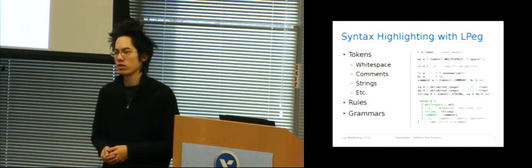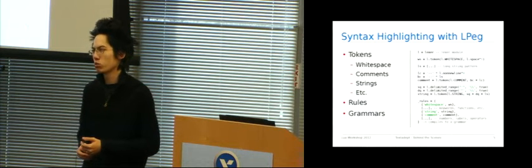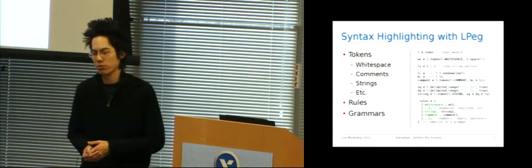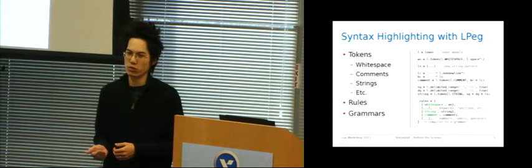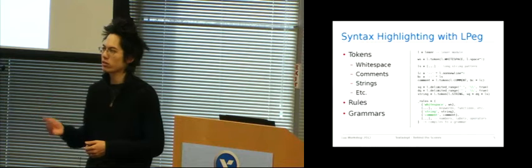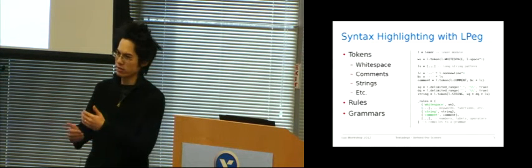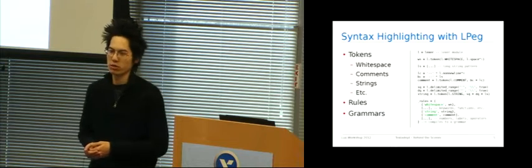Now, where it really gets interesting is in this rules table. This rules table is an ordered list of rules that can make up the Lua grammar. So the Lua grammar tries to match white space first, followed by keywords, functions, et cetera, and then strings and comments, and finally numbers, labels, and operators. So all of this together produces syntax highlighting for Lua. But how?